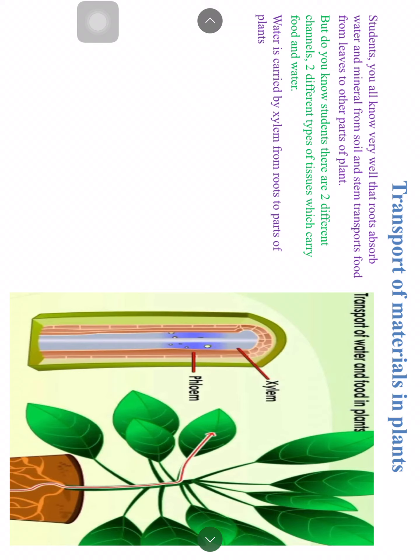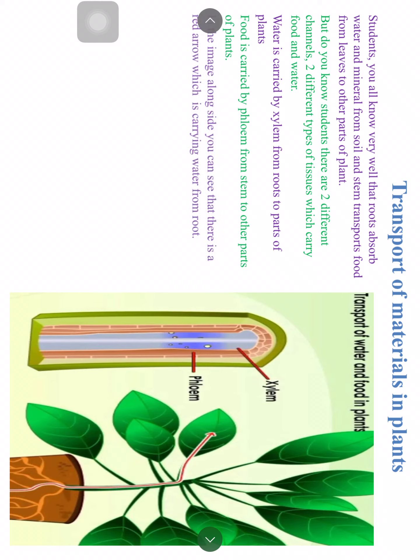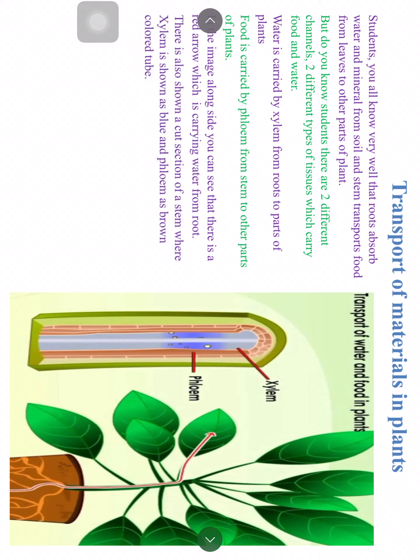Food is carried by phloem from the stem to other parts of the plant. In the image shown, a red arrow indicates the movement of water and minerals from roots through the stem to the leaves. You can also see a section of stem cut lengthwise, revealing a blue colored tube and a brown colored tube inside.